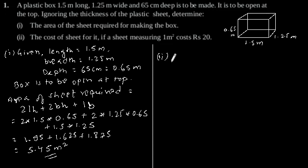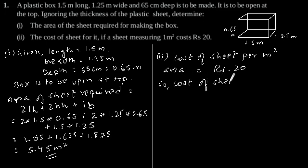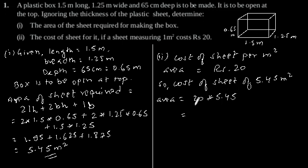The second part is to determine the cost of the sheet. If a sheet measuring 1 meter square costs Rs. 20, then the cost of sheet per meter square area is Rs. 20. So the cost of sheet for 5.45 meter square area is equal to Rs. 20 × 5.45, which equals Rs. 109.